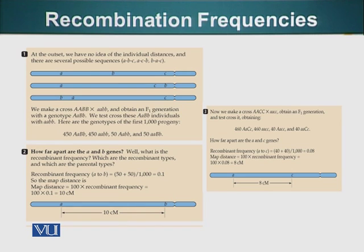We have 460 Aa Cc and also the other parent type 460 aa cc. Here we get 40 recombinants of Aa cc and 40 recombinants aa Cc.